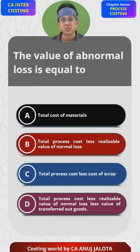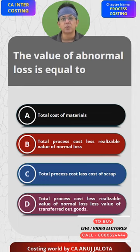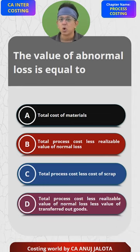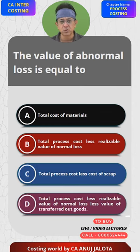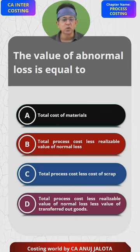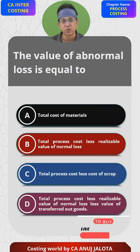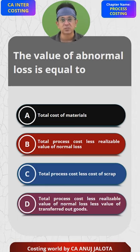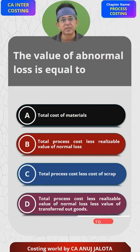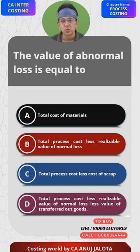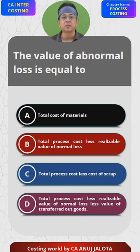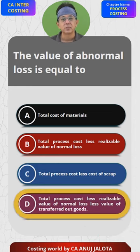Think about it: abnormal loss is your balancing figure. On the debit side, all your process costs come in. On the credit side, you reduce the scrap value of normal loss, and you reduce whatever is transferred to the next process — that is how abnormal loss becomes the balancing figure. So out of the four answers, D is the correct answer.